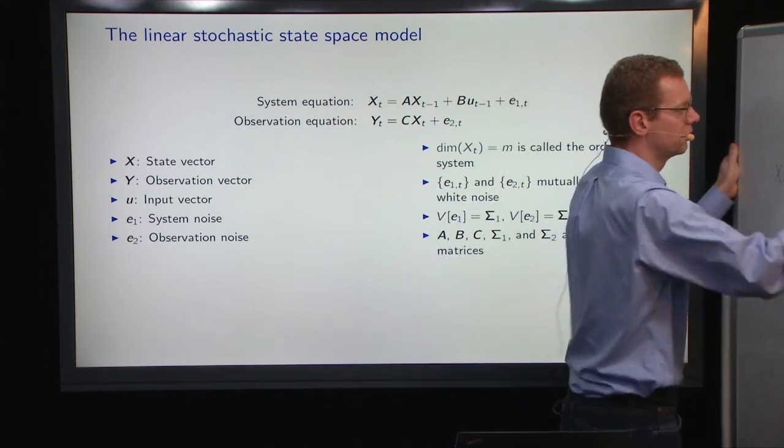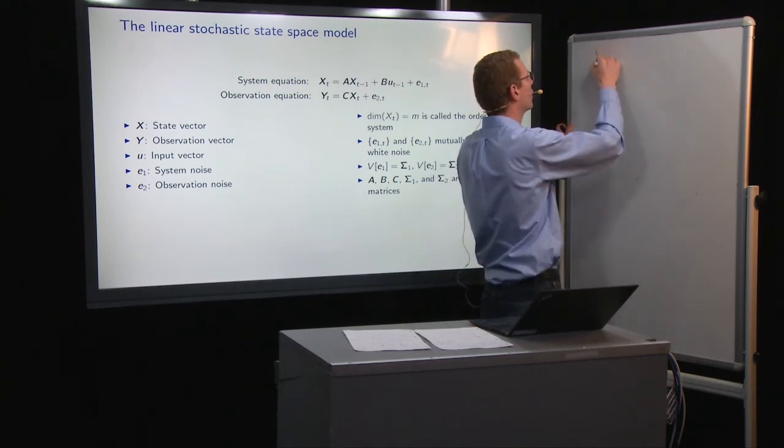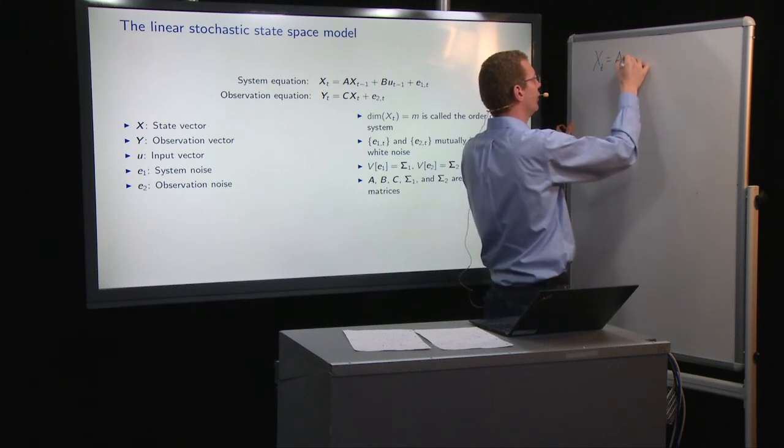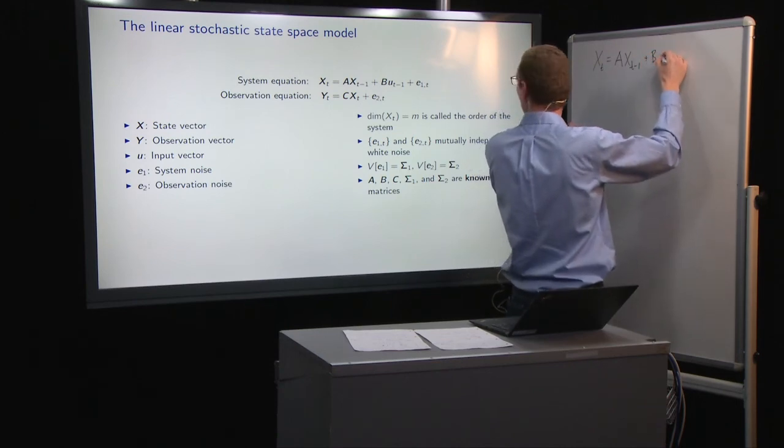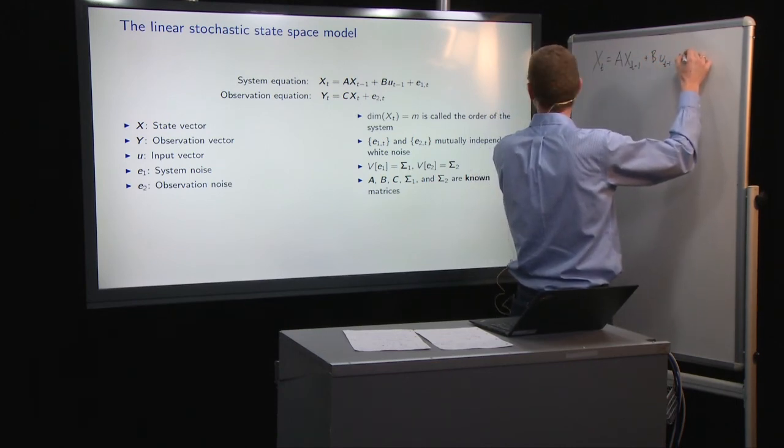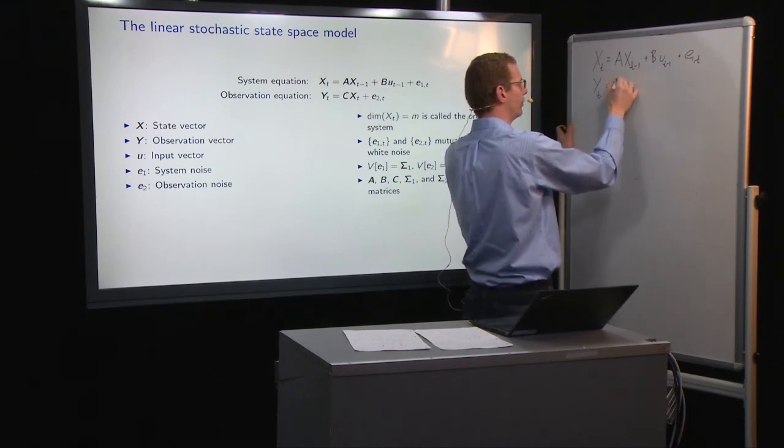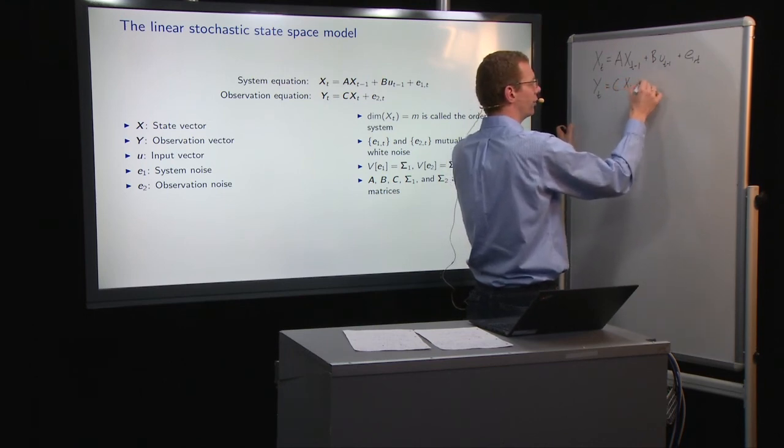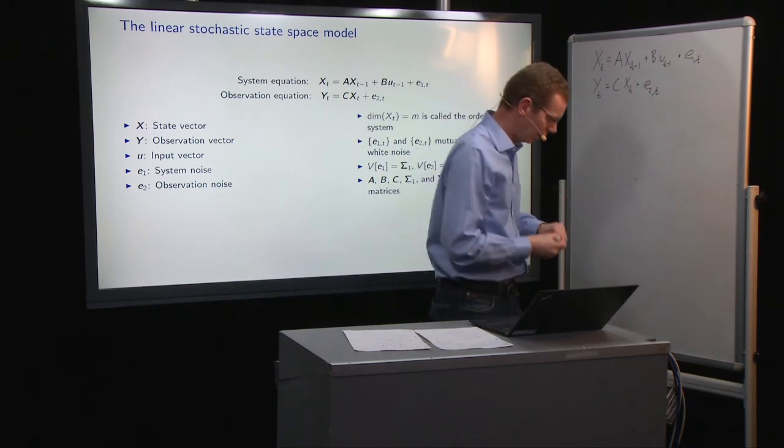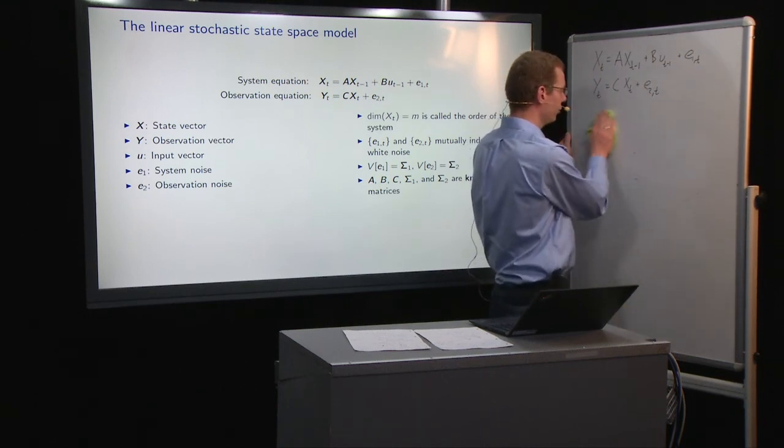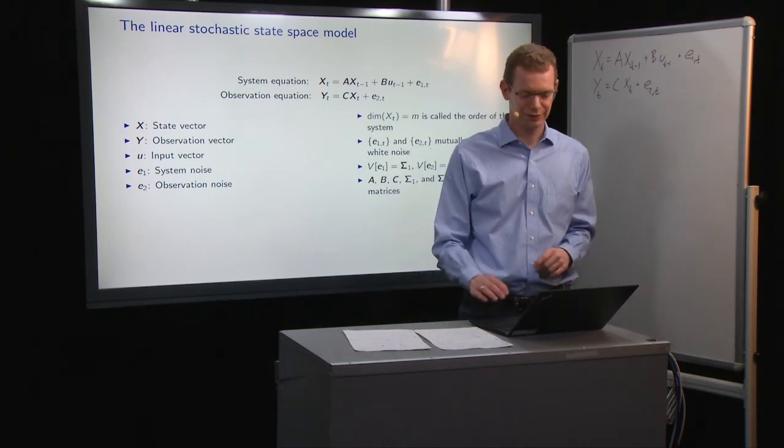Let me just put it over here so that we have it for reference later. x_t equals A times x_{t-1} plus B u_{t-1} plus, and then we call that e_{1,t}, and then we have the observation at y_t is C times x_t plus e_{2,t}. Sometimes you also have that the output depends on an input, and that you can add without changing the rest of the theory, but that's just to complicate things.